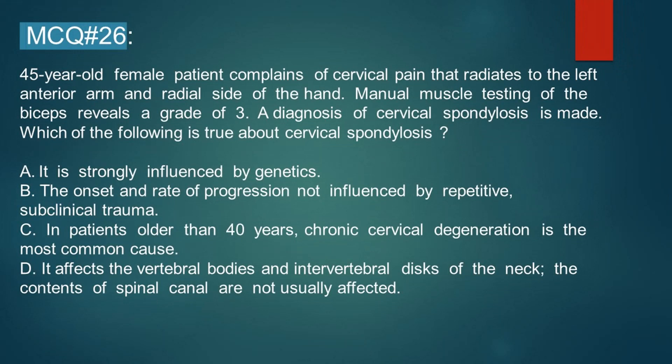On manual muscle testing of the bicep, it reveals a grade of 3 out of 5. On the diagnosis of cervical spondylosis, which of the following is true? Option A: it is strongly influenced by genetics. Option B: the onset and the rate of progression are not influenced by repetitive subclinical trauma.